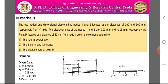Consider Numerical 1. A two-noded one-dimensional element has nodes 1 and 2 located at distances of 200 mm and 360 mm respectively from the y-axis. The displacements at nodes 1 and 2 are 0.03 mm and -0.05 mm respectively. Point P is located at a distance of 40 mm from node 1 within the element. Determine the natural coordinate, the linear shape functions, and the displacement at point P.